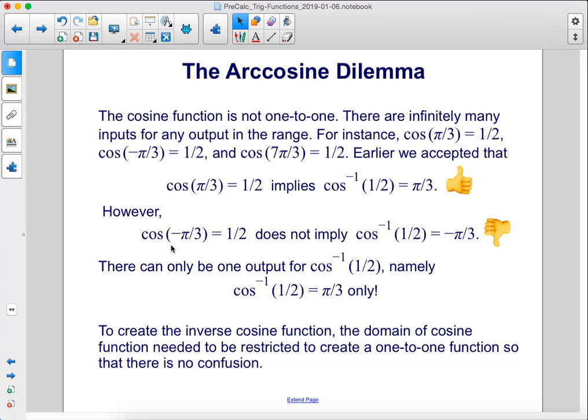However, cosine of negative π/3 equals 1/2 does not imply that the arc cosine of 1/2 equals negative π/3. There can be only one output for the arc cosine of 1/2, namely π/3. To create the inverse cosine function, the domain of cosine function needed to be restricted to create a 1 to 1 function so that there's no confusion.